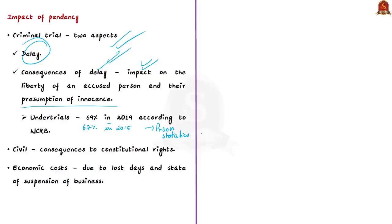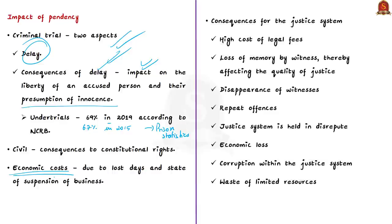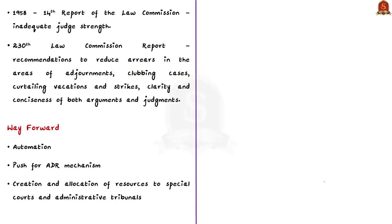High pendency and delays have economic costs due to lost days and the suspension of business — if a case involves a company, that company's business could be suspended during the trial period. There are also consequences to the judicial system itself: high cost of legal fees, loss of memory of witnesses affecting the quality of justice, disappearance of witnesses, repeat offenses, economic loss to the judiciary, increased corruption within the judicial system, and wastage of limited resources.